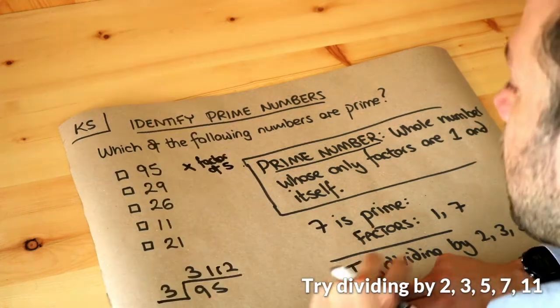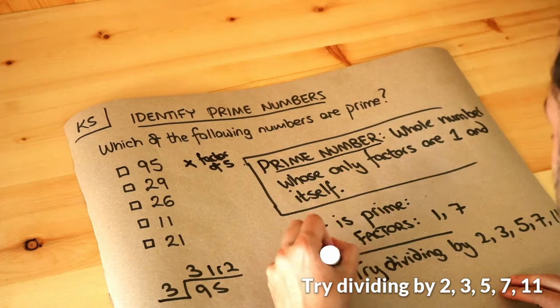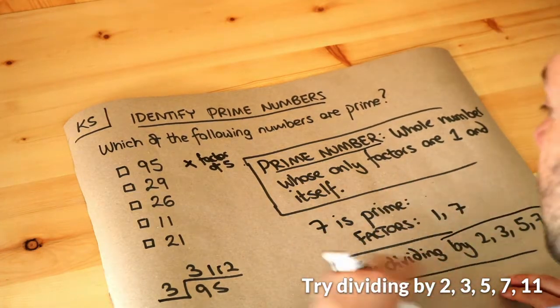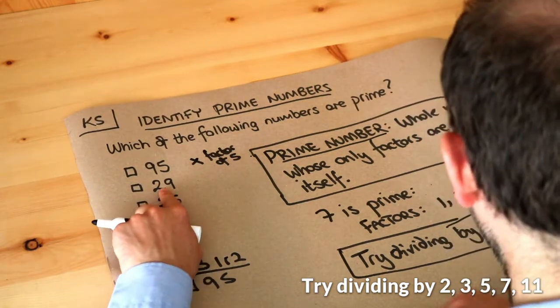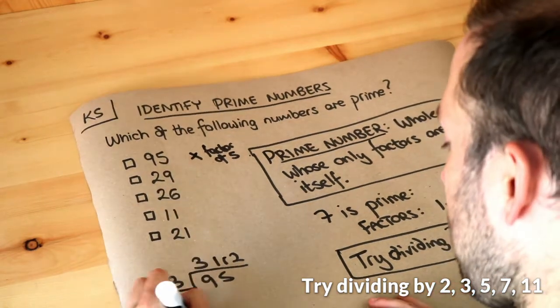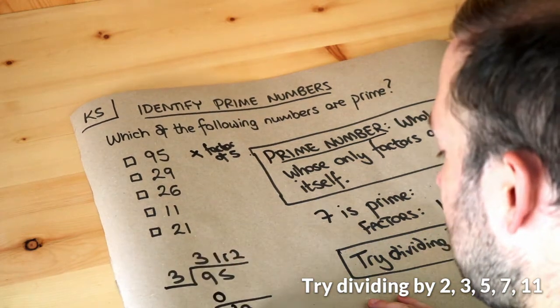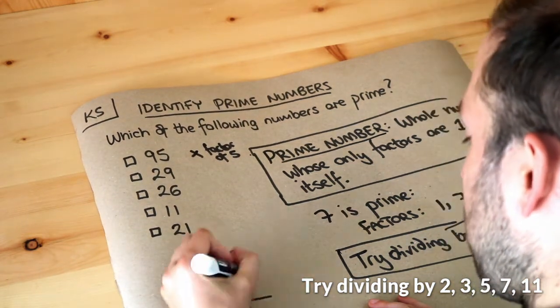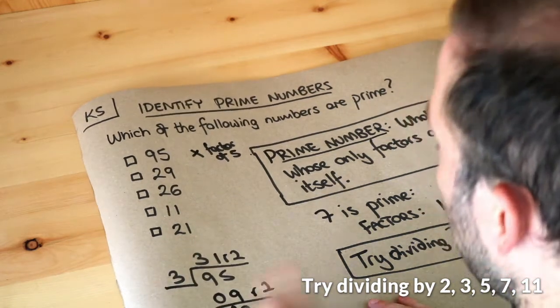29. Is that a prime number? Let's try these numbers again. Does 29 divide by two? No, it doesn't because it's an odd number. Does 29 divide by three? Three goes into two zero times, and then you're going to do threes into 29, which goes nine times remainder two. There's a remainder, so 29 does not divide by three.